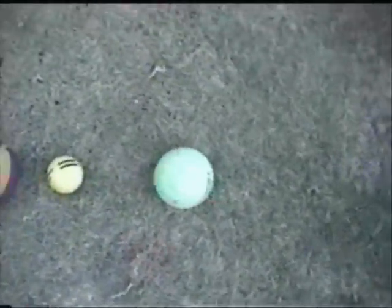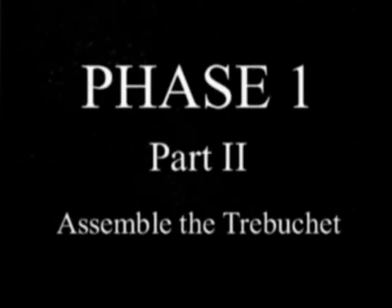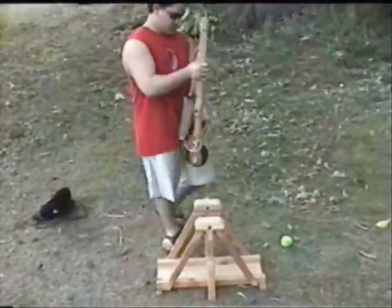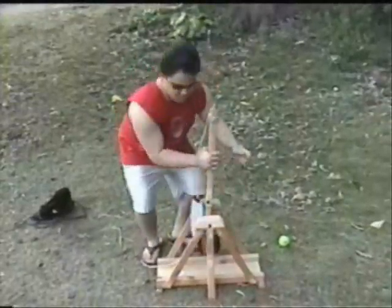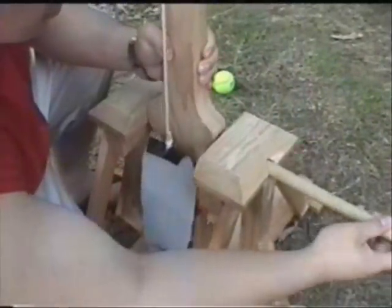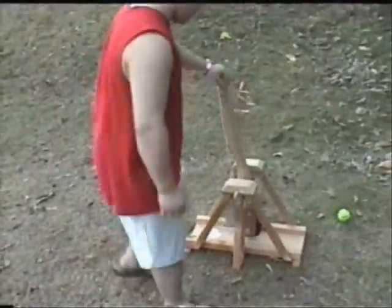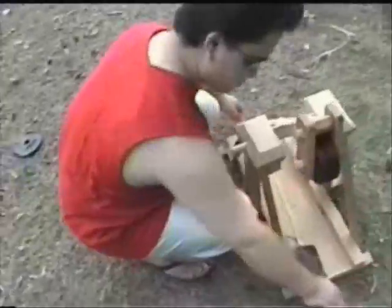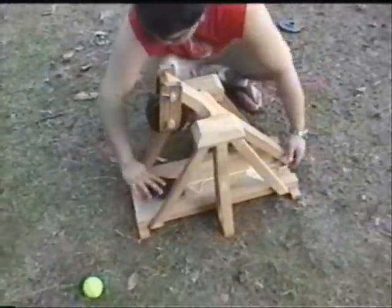Now you have all the materials you need to begin your experiment. I've got to assemble this thing. Begin by picking up the arm and bringing it over to the bracket of the trebuchet. Then, install the arm using the wooden dowel you found in the bushes. Make sure the arm is nice and secure. Then, attach the launching string to the hook located at the end of the arm.